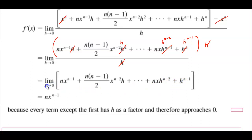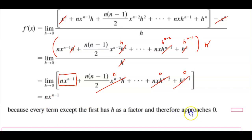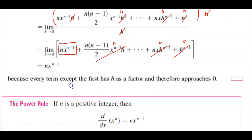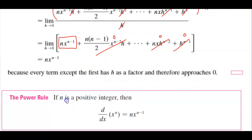And now we can apply h approaching 0. So that means that this h makes everything 0 here, this h also makes everything 0 here, and this h makes everything 0 here. So basically, the only thing that's left over is the value of n times x to the power of n minus 1, because every term except the first has h as a factor and therefore approaches 0. So this gives us the power rule: if n is a positive integer, then the derivative with respect to x of x to the n power is equal to n times x to the power of n minus 1.